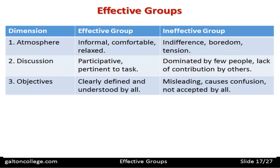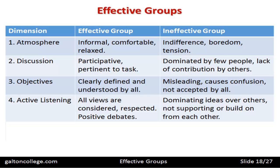For objectives, an effective group has them clearly defined and understood by all, whereas an ineffective group has misleading objectives causing confusion, not accepted by all. For active listening, an effective group considers all views — they're respected, with positive debates. The ineffective group has dominating ideas over others, not supporting or building on each other, with internal stress, confrontation, argument, and destructive rather than constructive disagreement.